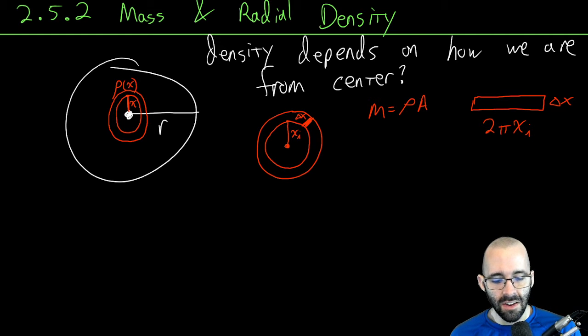2π times the radius. Technically the top would be 2π times (x_i plus delta x) if you really wanted to be precise. You could use what we know about parallelograms and areas of parallelograms.